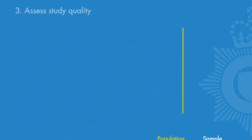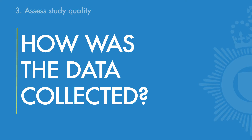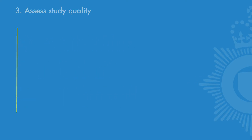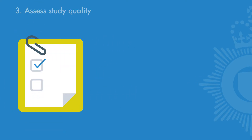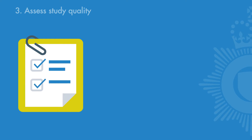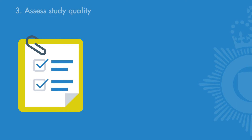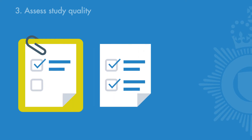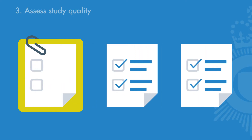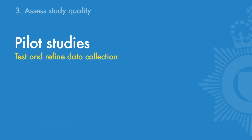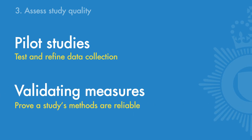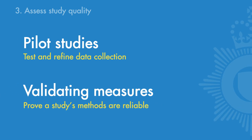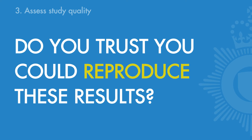Next, we want to look at how the data was collected. Did the researchers use the best methods to answer their research question? For example, when gathering data on private or sensitive issues, a self-completed questionnaire rather than one involving an interviewer may help to ensure genuine responses. Pilot studies can help iron out kinks in data collection, and validating measures can help to prove a study's methods are reliable. Do you trust you could reproduce these results?